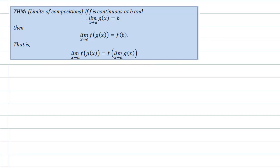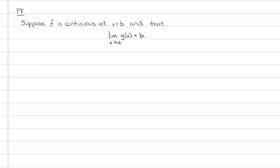Like any good proof, we start with the given assumptions. We're allowed to assume that f is continuous at b, and that the limit as x approaches a of g(x) equals b. I'll write that at the beginning of the proof. It's always good practice to do scratch work first and then write a clean proof — I'll keep scratch work on the right-hand side so you can follow my reasoning.